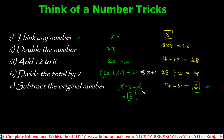Such tricks can be converted into linear equations using a variable, and then you can understand the underlying process. If your audience starts guessing your logic, you can change the trick — for example, instead of adding 12, add 14, and adjust your predicted answer accordingly. You can make your own questions and reveal solutions anywhere, just by converting sentences into mathematical equations and simplifying.